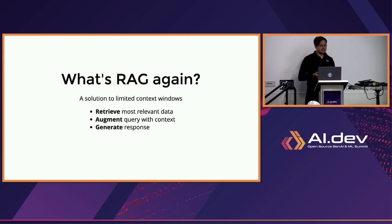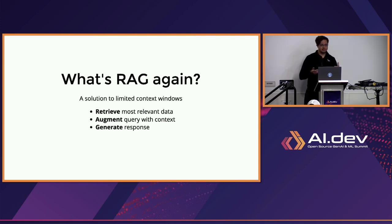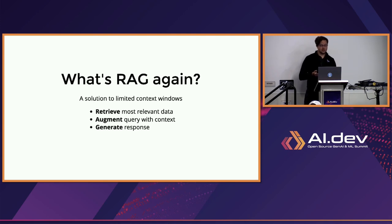But first, just in case, a reminder: what is Retrieval Augmented Generation? The core idea behind RAG is that LLMs have less space in their prompts than you have data. You have mountains of data and they only have limited context windows, so you can't get them all your data. So every time you have a question, you have to retrieve the most relevant data to your query, augment your prompt with that data, and then generate the answer.